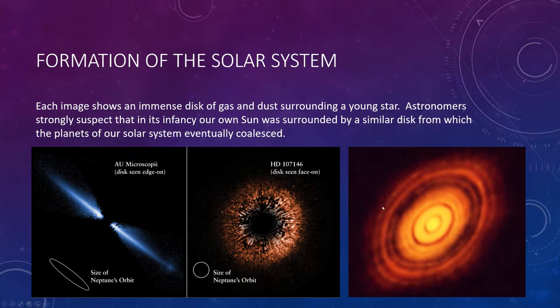I want to draw attention to this image on the right. This is actually a fairly recent image—taken in the last two or three years. What you're really looking at is the formation of our solar system. We can see the hot central object, which will eventually become a star, and then these dark concentric rings.